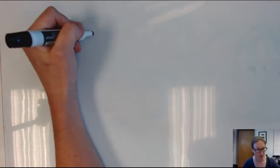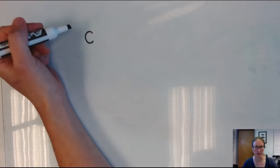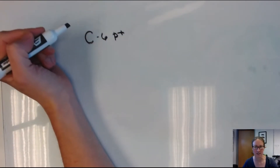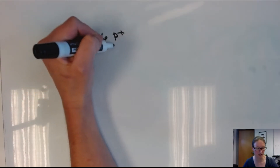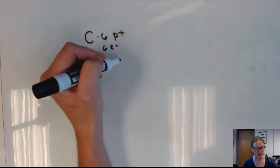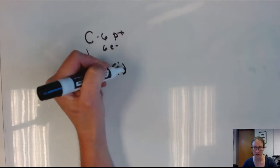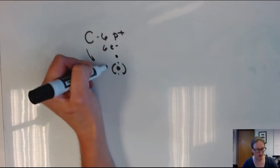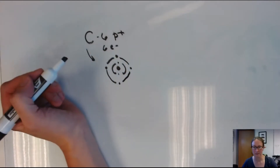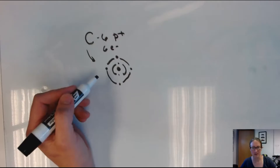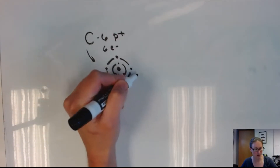Now it's time to talk more specifically about carbon. When talking about bond formation previously, I mentioned that since carbon has six protons in its nucleus, it's going to have six electrons. So if here's our nucleus, we're going to have two electrons in the innermost orbital, and then that's going to leave us with four unpaired electrons in the outermost orbital — in the valence shell. So what that means is that carbon has the potential to bond with up to four other atoms.